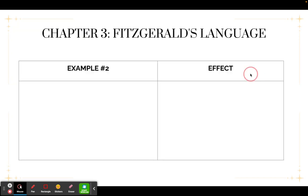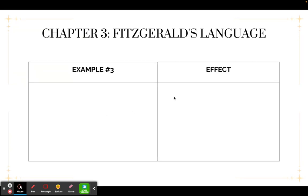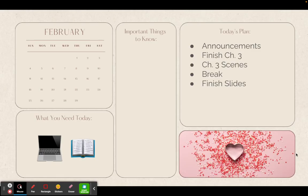You have four examples to do. You put the example and then talk about how you know that device is being used there. For example: 'Here in this sentence from page 10, Fitzgerald says that Gatsby is blah blah blah — he's using a metaphor and I know this because blah blah blah.' Then we're going to continue on with reading chapter three, watch the scenes, and finish the slides.